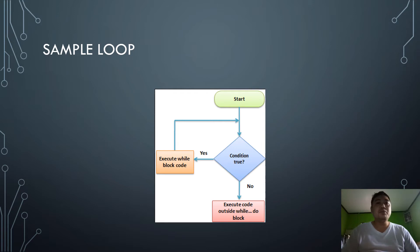This is a sample loop. You can see on the diagram that it has a start, a condition which depicts a diamond, and a condition statement has true or false implication. Just like in the example, if the condition is true, then there will be an execution of the while statement block code and going back to start. If not, then the code will be executed outside the loop and do the block statement.